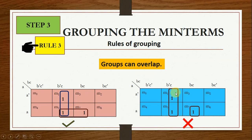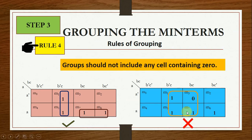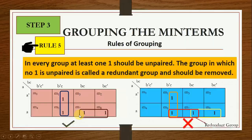Rule 4: groups should not contain any cell with 0. After plotting 1s, remaining cells can be marked as 0s, but while grouping we must not include any cell containing 0. Rule 5: in every group, at least one 1 should be unpaired — very important. A group in which no 1 is exclusively present (unpaired) is called a redundant group and it must be removed.